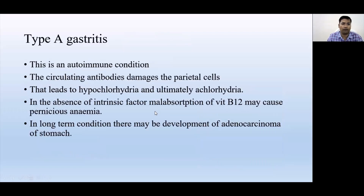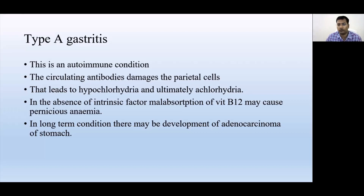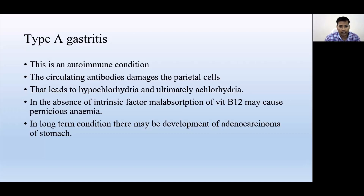First is Type A gastritis. Type A gastritis is an autoimmune disorder, meaning our immune system starts working against us. Antibodies are developed in our body which start harming our own tissue — specifically, they start damaging the parietal cells of the stomach.